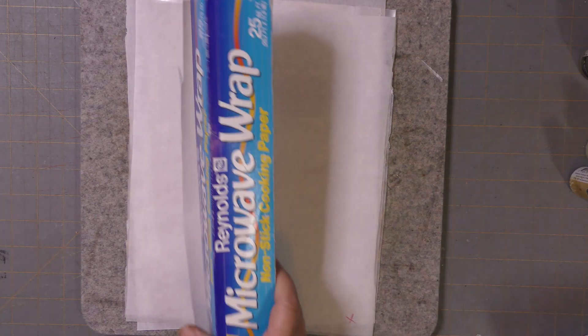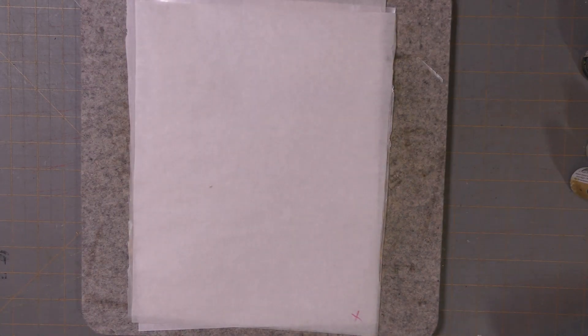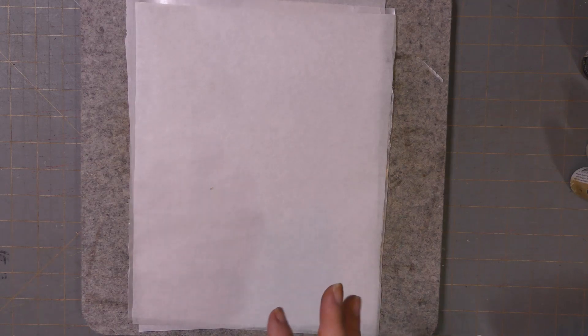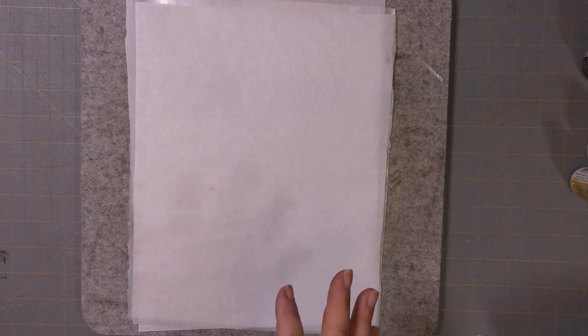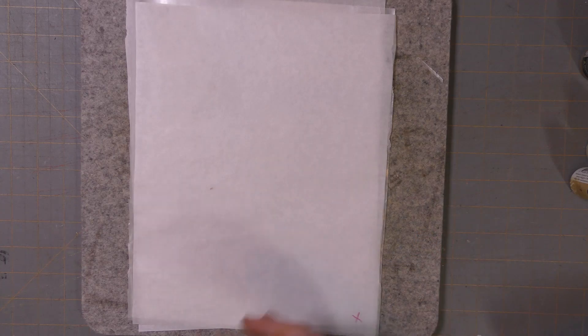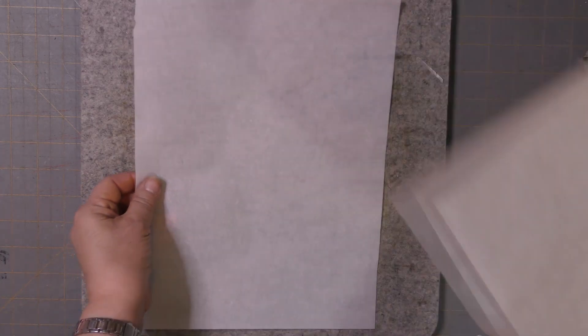I have this microwave wrap—I think it's the same as parchment and they work equally well. Don't use freezer paper. Freezer paper is waxy on one side and has parchment on the other side, so you'd think it would be perfect, right? But it sticks to the paper and will not come off, so don't use that.